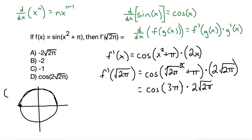The coordinate on this unit circle would be negative 1 comma 0. And since the cosine is the x coordinate, we'll take the negative 1. So that means that the cosine of 3 pi is equal to negative 1. We need to multiply that by 2 root 2 pi. And so that simplifies to negative 2 root 2 pi, or letter A.